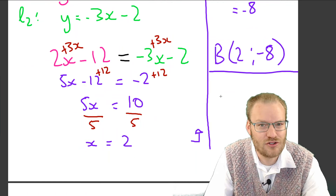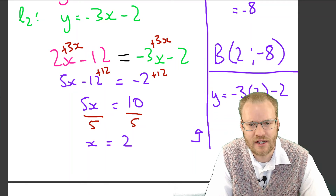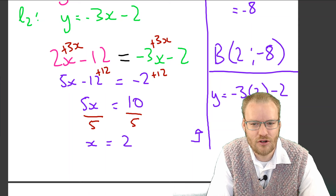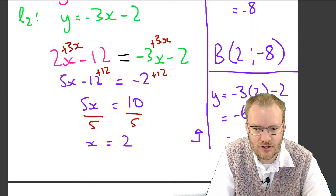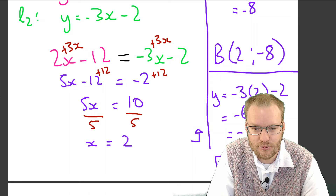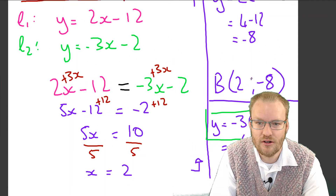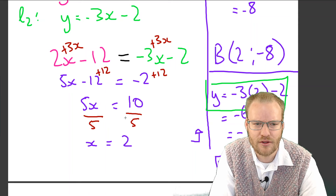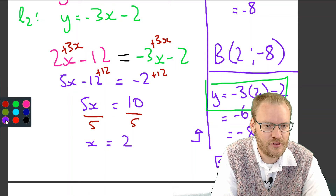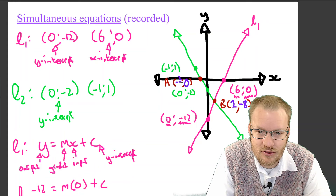Let's verify using L2: y equals minus 3 times 2 minus 2, which is minus 6 minus 2, equals minus 8. Same answer — it doesn't matter which graph you substitute into, because point B lies on both lines. That confirms our point B is the coordinate 2, negative 8.